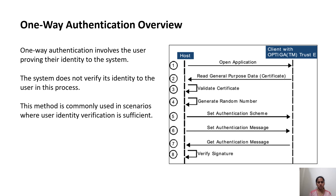One-way authentication involves the user proving their identity to the system. The system does not verify its own identity to the user in this process. This method is commonly used in scenarios where user identity verification is sufficient.